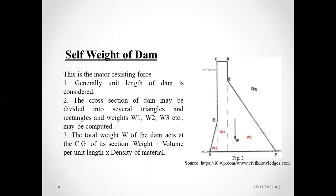For the self-weight of the dam, we consider concrete as the material. The dam is made up of concrete; steel reinforcing is given at the corners and sides but it does not affect the density of concrete. Generally, a unit length of the dam is considered. The cross section of the dam may be divided into several triangles and rectangles and recalculated. The total weight W of the dam acts at the center of gravity of each section. Weight equals volume per unit length multiplied by the density of the material.